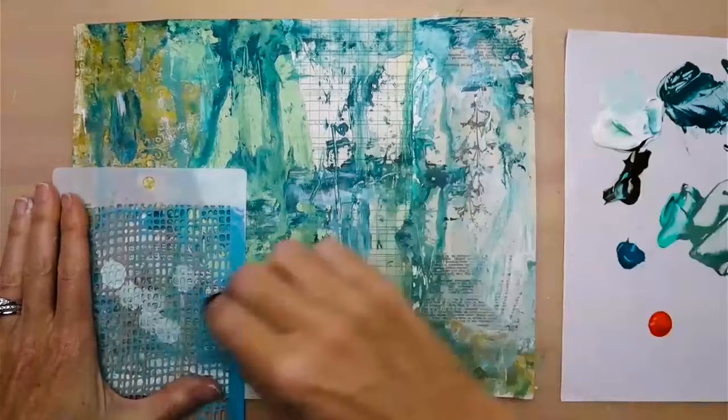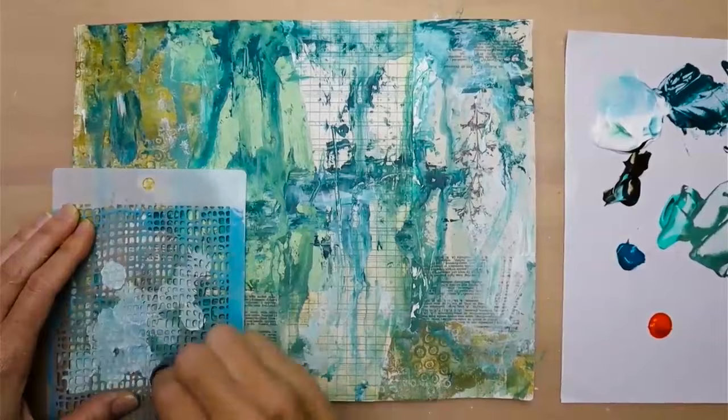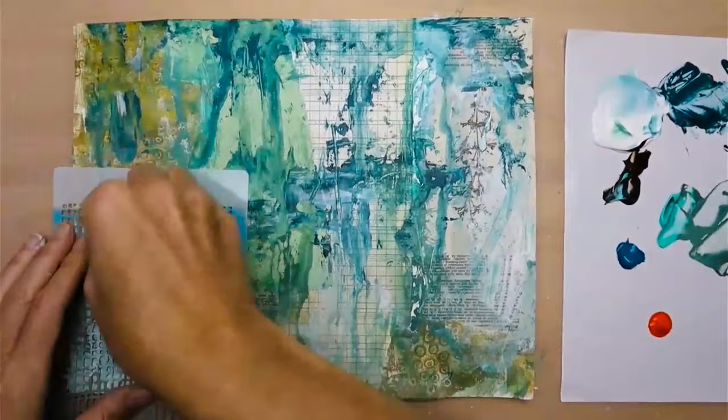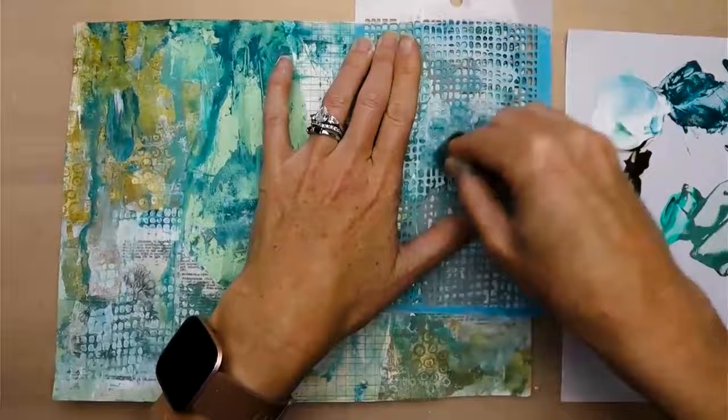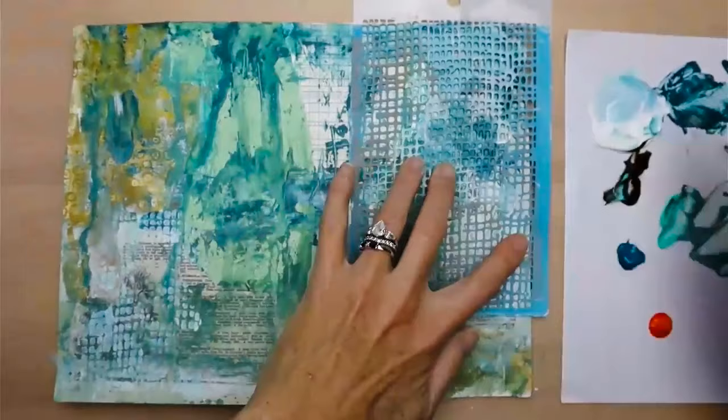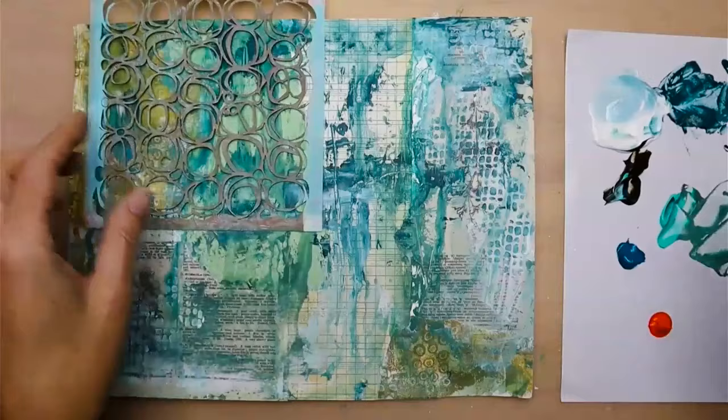So this is just a stencil I use, a really nice little background stencil. And I'm using the Finger Dabber, really easy to put some stencil designs down. I just have to hold it real still and just kind of twist it around so it doesn't get under the stencil.